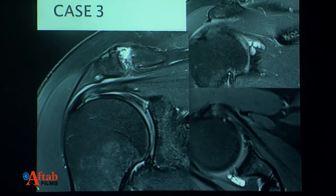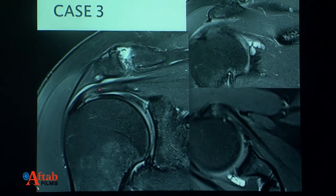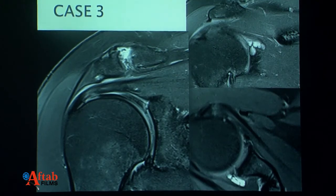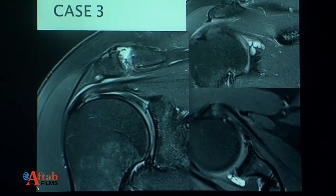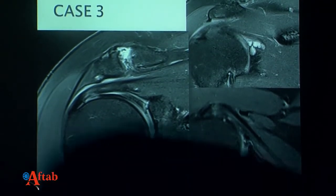Coming to rotator cuff injury: this is the footprint of the supraspinatus tendon on the coronal view. The diseased area shows signal change at the musculotendinous junction. The fibers can be divided into articular fibers, intrasubstance area, and bursal aspect. In this case there is irregularity and fraying of the bursal fibers, so the report should mention fraying and irregularity of the bursal fibers with possible partial thickness tear along the bursal surface. This is something you may not confidently call a tear on ultrasound — you may see tendinosis, but that is one of the limitations of ultrasound.